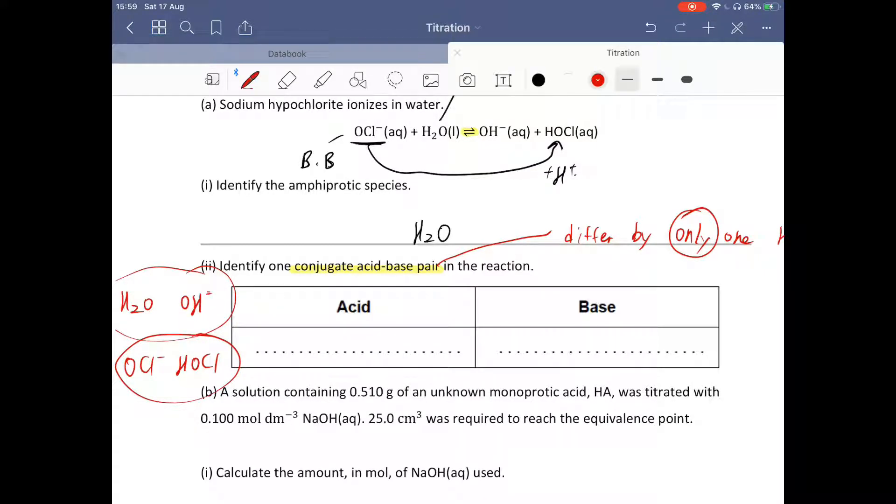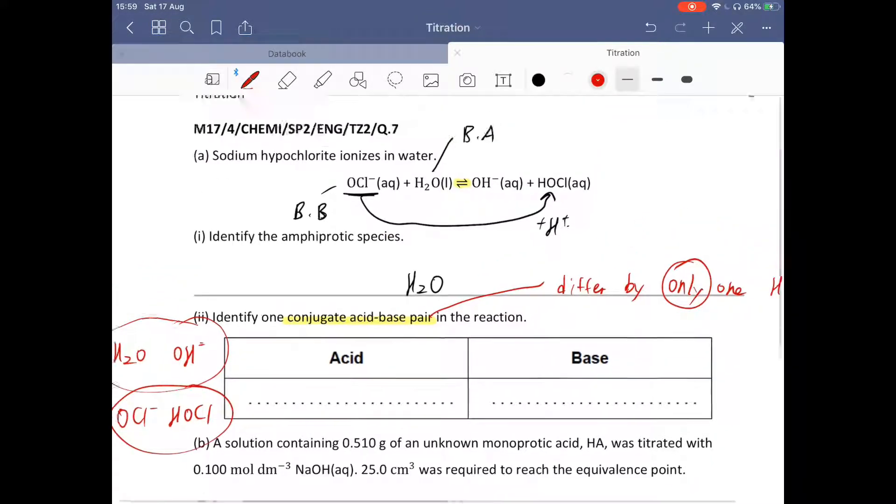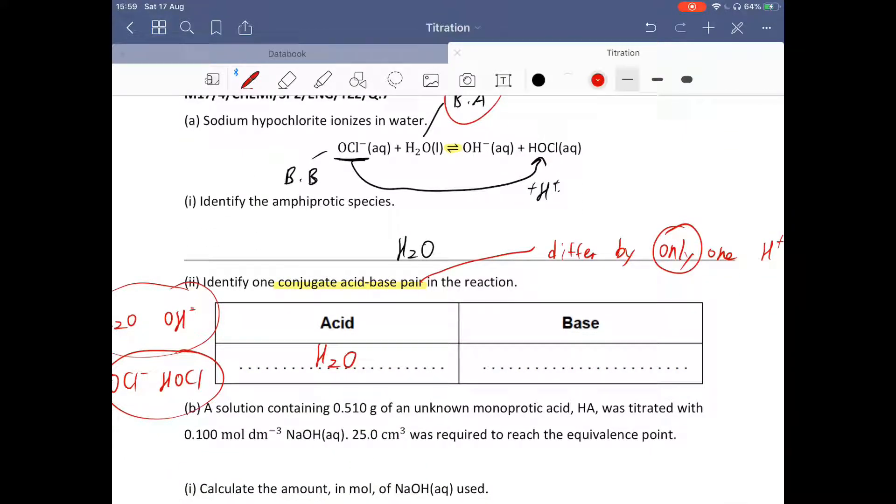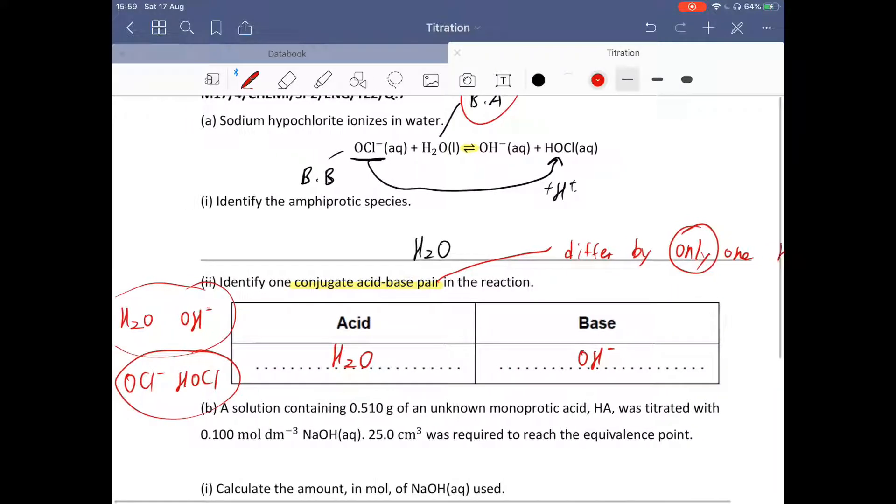But be careful, you should write it correctly, which one is acid and which one is base. H2O is a Bronsted-Lowry acid, so you can write H2O as acid and hydroxide ion as a base. And hypochlorite ion is a Bronsted base, so OCl- is a base, and HOCl is an acid.